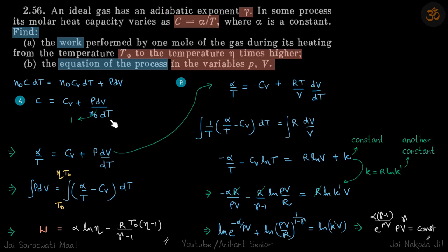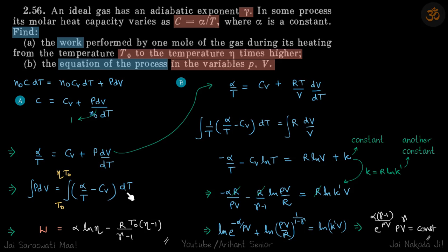We need the term of temperature and we already have the term of PdV, so we can just integrate and get our answer. We write α/T = Cv + PdV/dt. From here we separate the PdV and temperature terms: the integral of PdV equals the integral of (α/T − Cv) dT, with the range of T from T₀ to ηT₀.